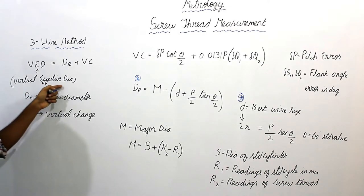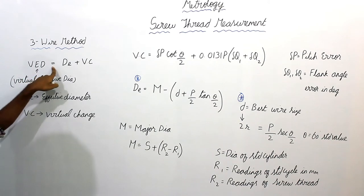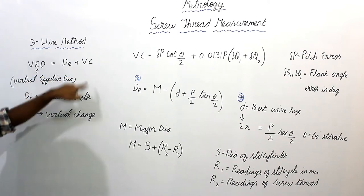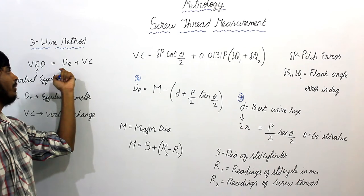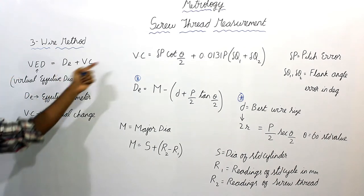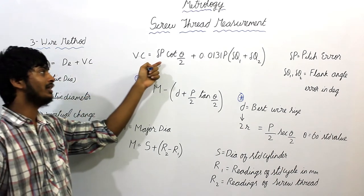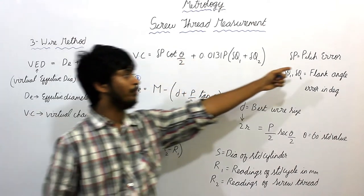Virtual effective diameter is given as VE that is equal to effective diameter plus virtual change. Effective diameter plus virtual change. Virtual change is given as del P where del P is pitch error.